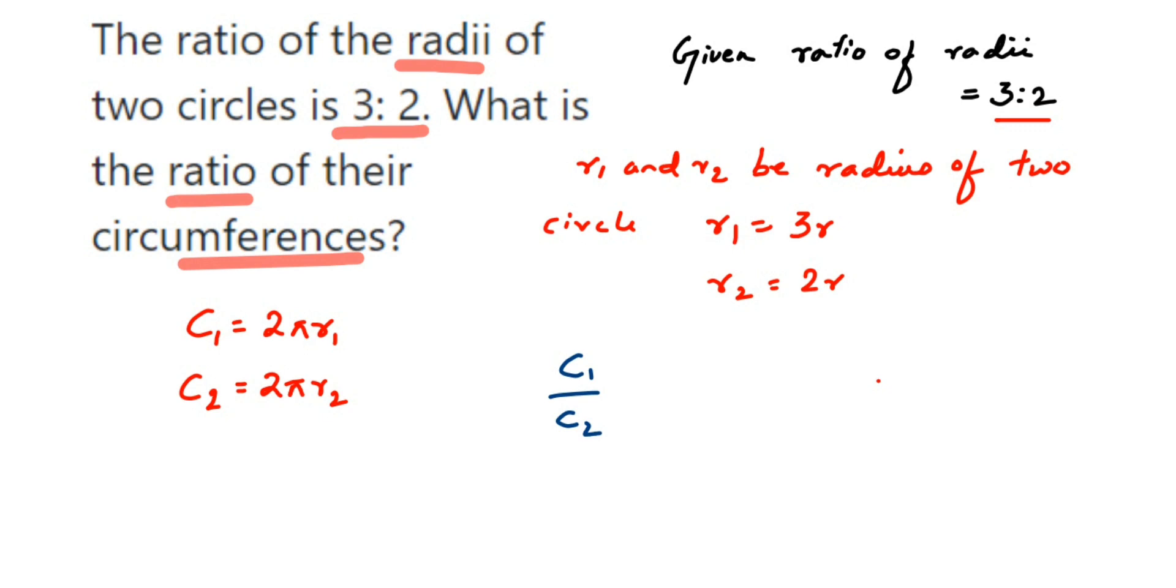So what we know - c1 is nothing but 2πr1 divided by c2 which is nothing but 2πr2. So we can cancel 2π and 2π.